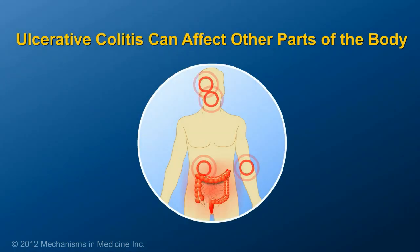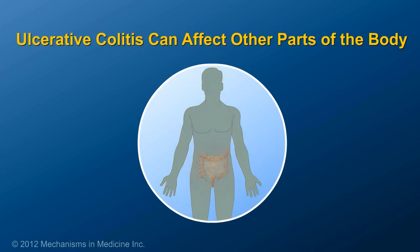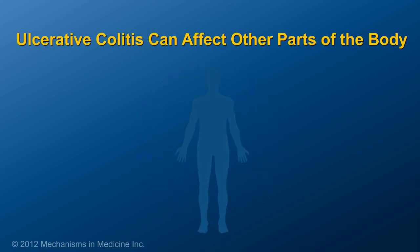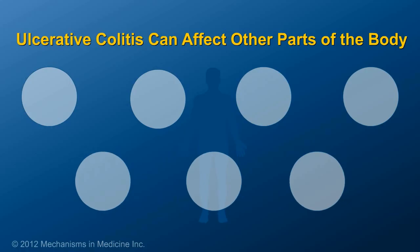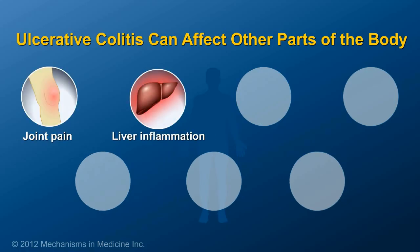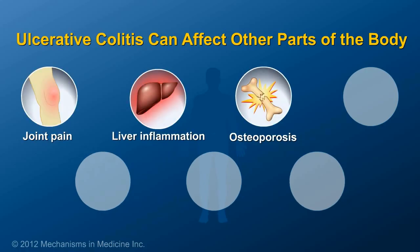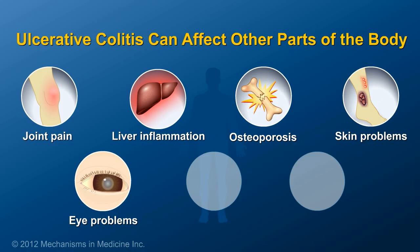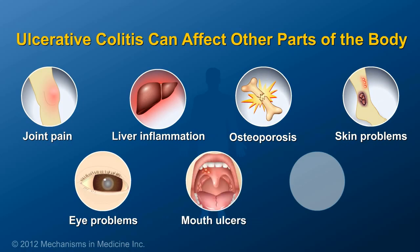In addition to symptoms involving the colon, ulcerative colitis can affect other parts of the body. Symptoms outside of the GI tract can include joint pain, liver inflammation, osteoporosis, skin problems, eye problems, mouth ulcers, and anemia.